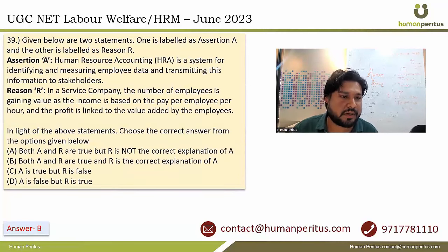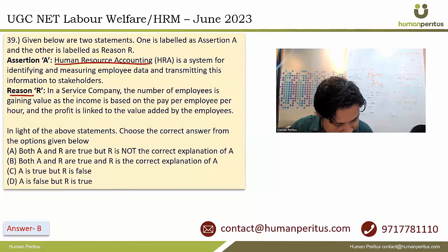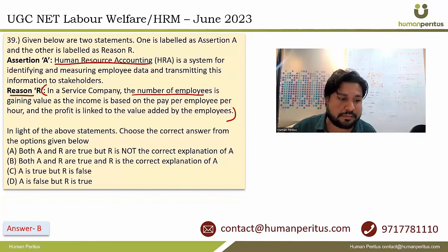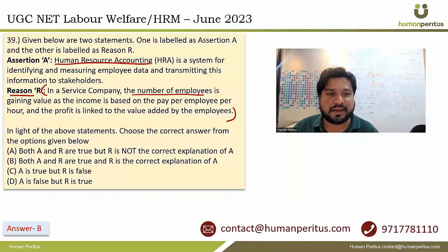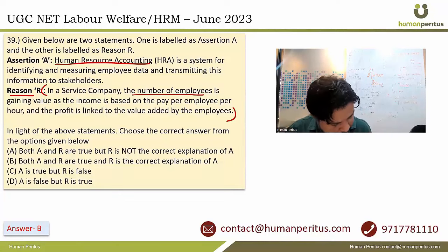Two statements are given as assertion and reason. The assertion provides a definition of human resource accounting, and the reason explains how the number of employees is important and why HR is important in service companies. UGC gave the answer as R being the correct explanation of A, but we believe the more appropriate answer is option B — both assertion and reason are mutually correct but not explainable by each other.